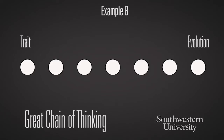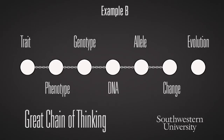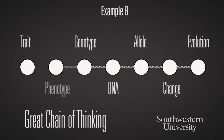Now we have option two. Trait is still in the first circle and evolution is still in the last circle. But in this case, a trait might be expressed as a phenotype — that's the physical of what you see. That phenotype has a genotype basis. That genotype is part of the DNA. DNA is within a gene or an allele. Alleles change in proportion, and that change in proportion is evolution. We can also do it backwards: evolution is a change in allele frequencies, which are DNA, which leads to genotypes, expressed as phenotypes that we see as traits. You can go forwards or backwards in the great chain of thinking.